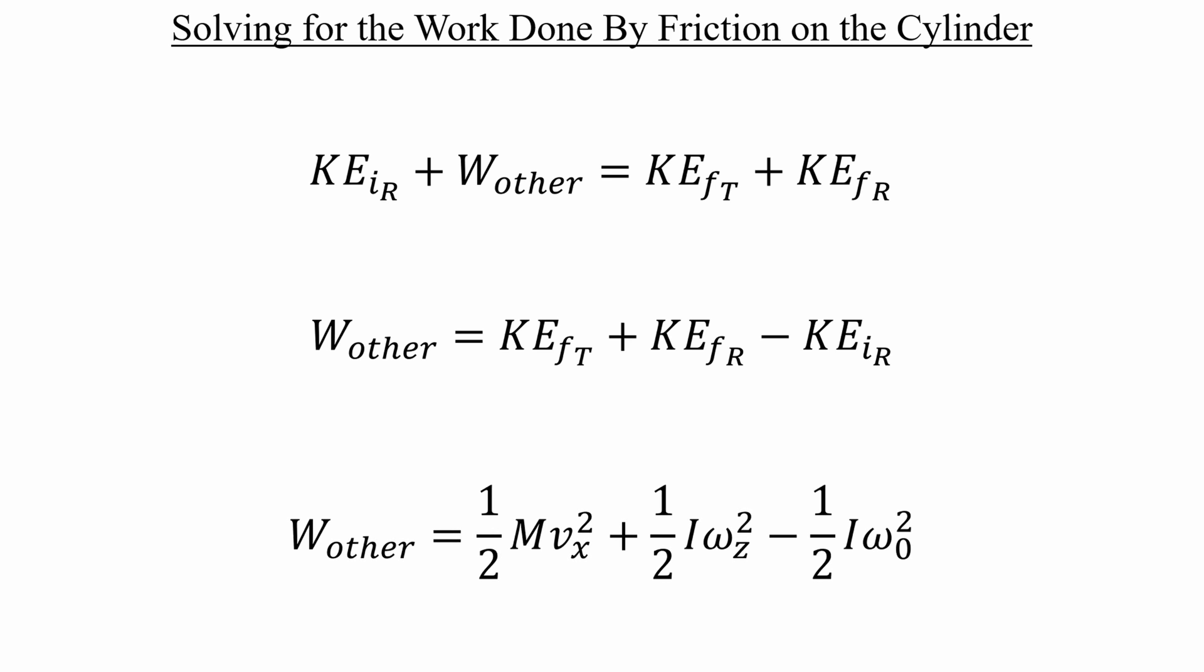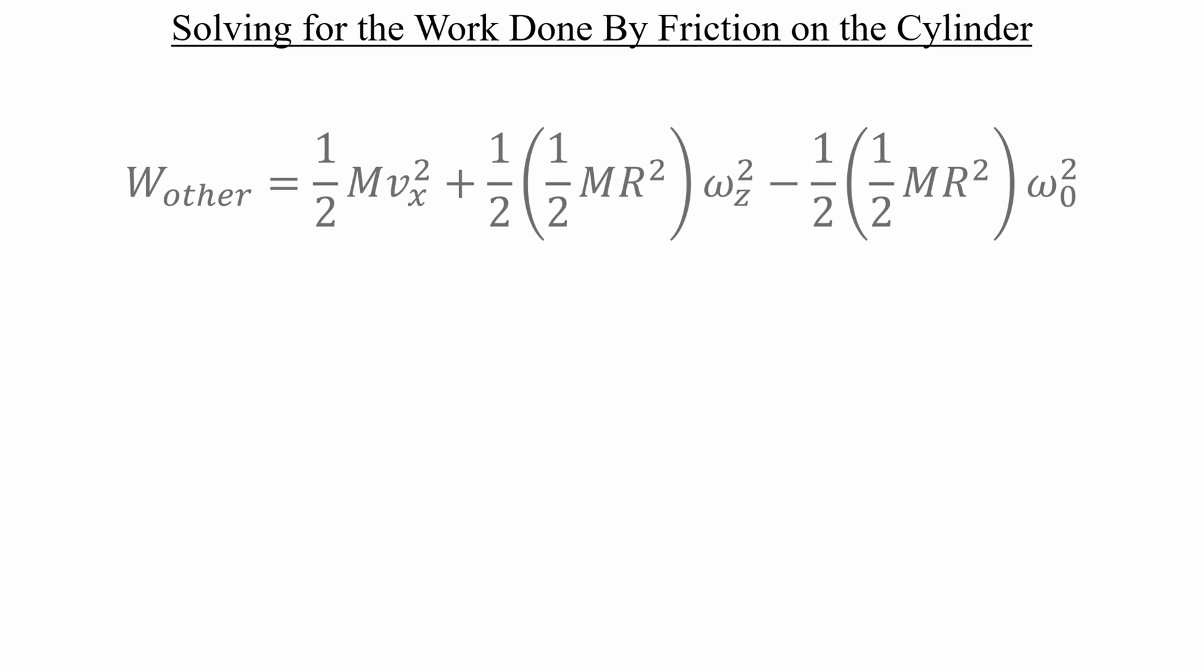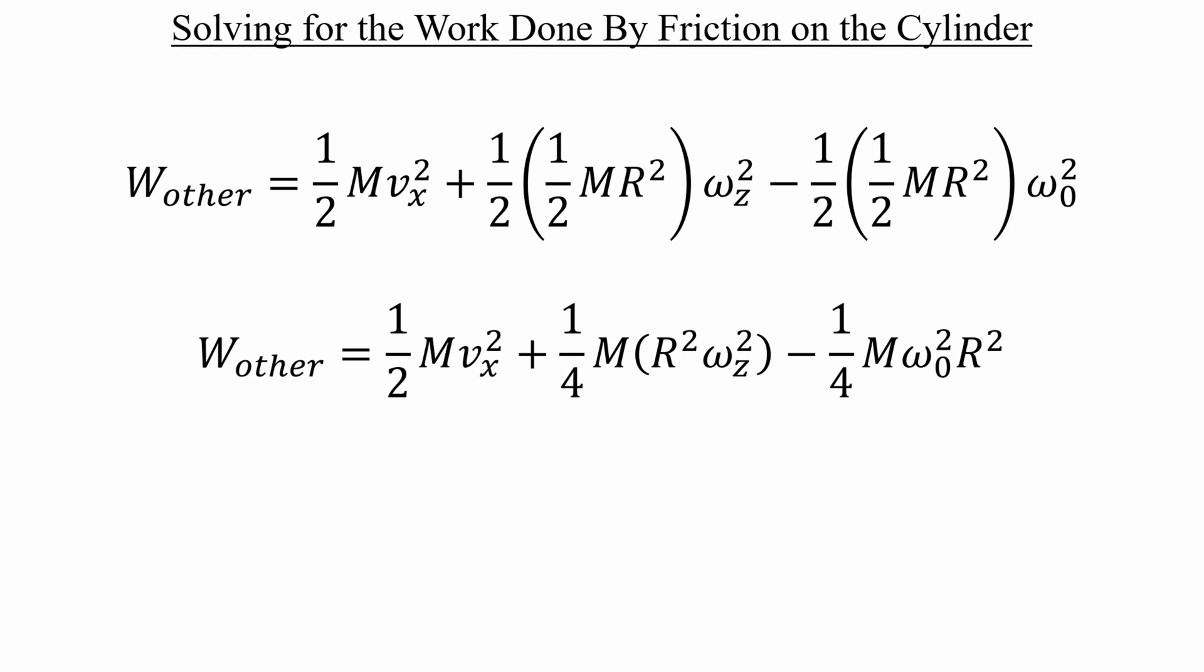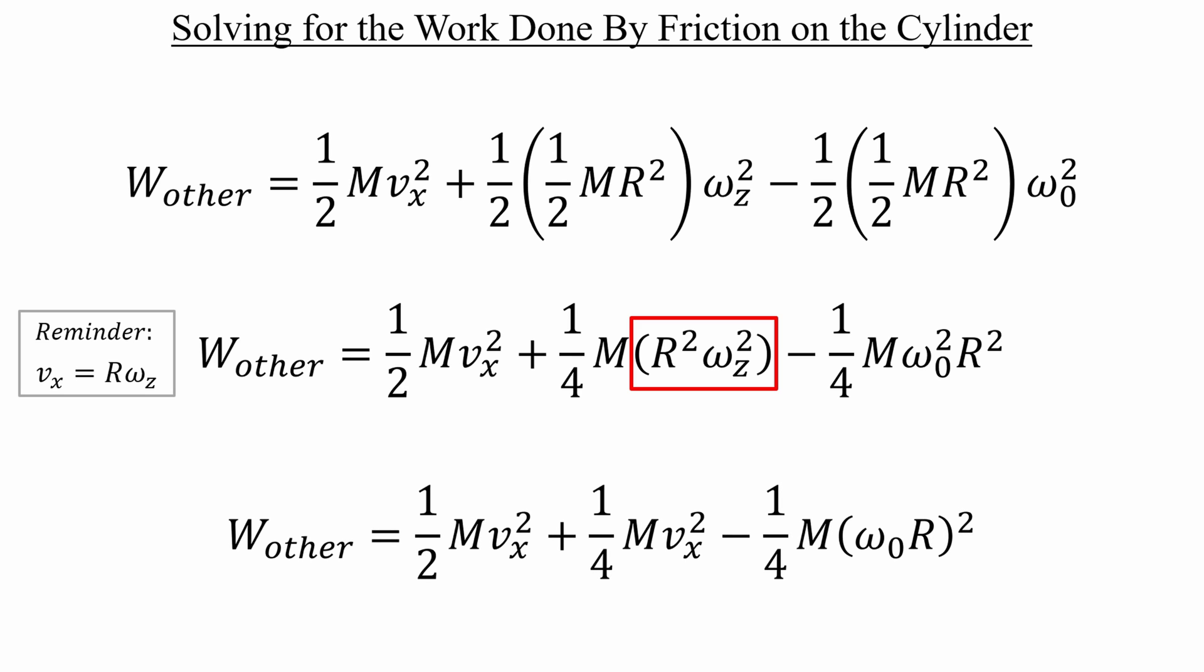Now we can plug in some definitions. The moment of inertia for a cylinder is one-half mR squared. So let's make that substitution next. The one-halves in the rotational terms will combine to make one-fourth. And we get a quantity in the second term that we've actually seen before. One of our previous reminders said that the center of mass velocity, once rolling without slipping begins, is equal to r omega z.